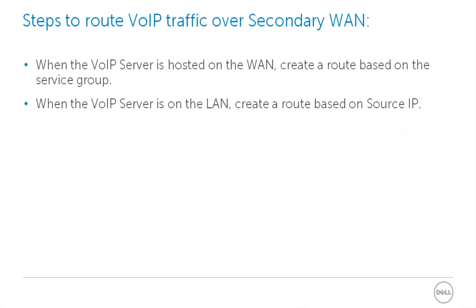To route voice over IP traffic over a secondary WAN interface, we need to create a static route. There are two scenarios here. When the voice over IP server is hosted on the WAN, we need to create a route based on the server's group. When the voice over IP server is on the LAN or any internal network, we create a route based on the source IP.